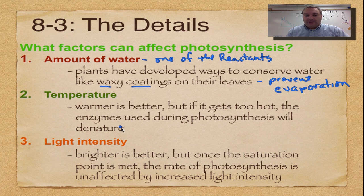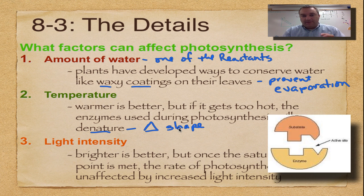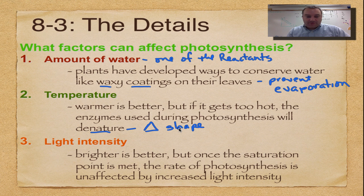Warmer is better, but if it gets too hot the enzymes will break down. 'Denature' is the fancy word that means change shape — and remember, triangle means change. If you change the shape of an enzyme you change the shape of the active site and it will not work. So denaturing an enzyme is bad.